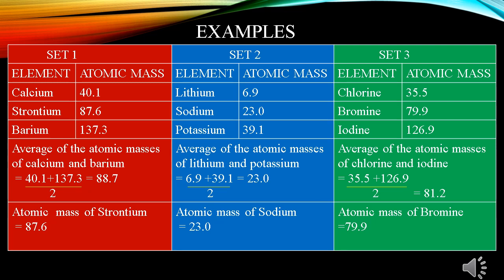Let us study some examples to understand Dobereiner's triads in a better way. On the screen you can see the three sets of example as written. In the first set of example calcium, strontium and barium are arranged in the increasing order of their atomic masses. When we take the average of the atomic masses of calcium and barium we get 88.7 which is approximately equal to the atomic mass of strontium. Then in the second set lithium, sodium, potassium are arranged in the increasing order of their atomic masses. When we take the average of atomic masses of lithium and potassium we get 23 which is approximately equal to the atomic mass of sodium. Similar way we can solve the third set of example. So these all sets represent Dobereiner's triads.